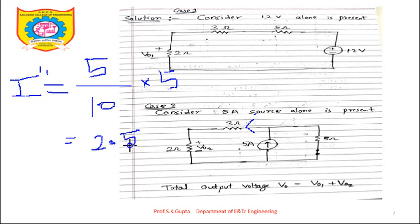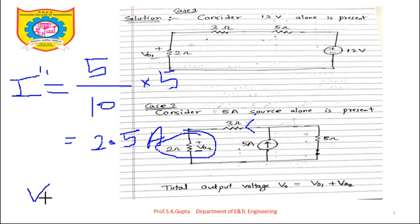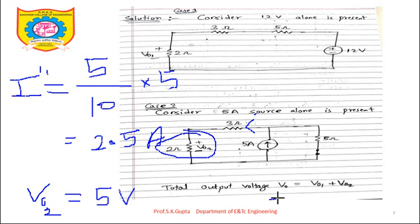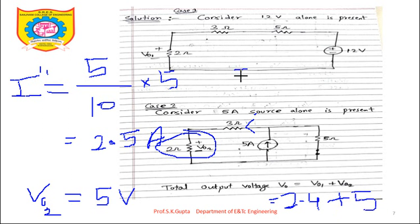So I'' = 2.5A flows through the 2Ω resistor. By Ohm's law, V02 = I'' × R = 2.5 × 2 = 5V. Adding algebraically: V0 = V01 + V02 = 2.4 + 5 = 7.4V. The final answer for V0 is 7.4V.